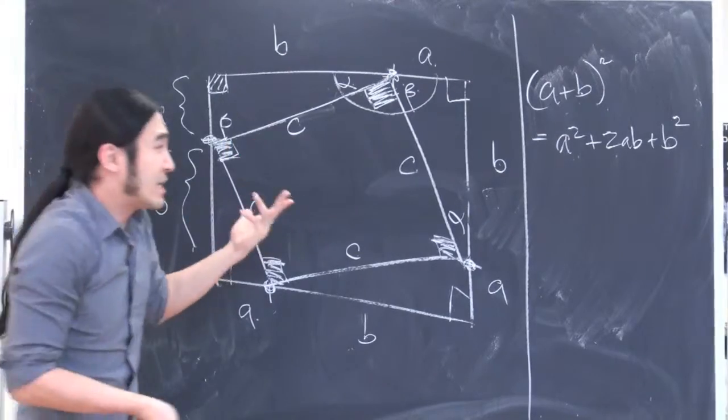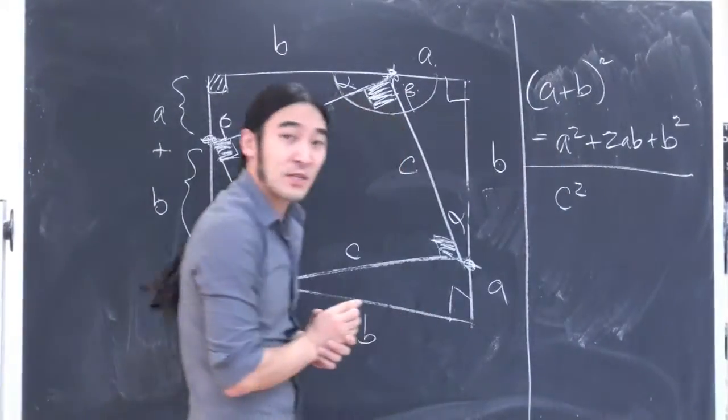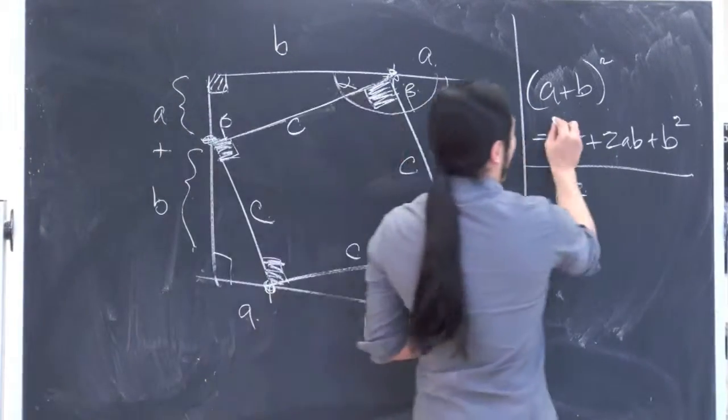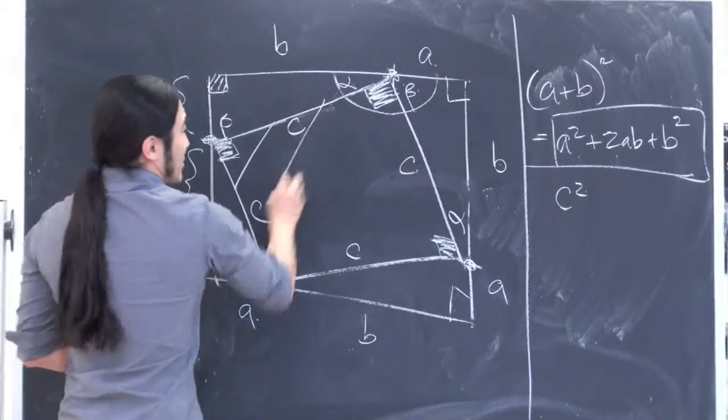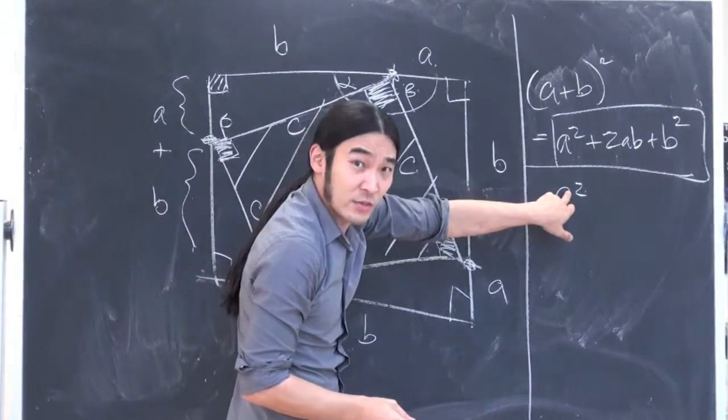Now let's focus on the inside square. That's simple. That's just C times C. So that's C squared. Do you guys agree? So now let's do it piecemeal. So I know the entire area is this thing, right? And I know the area inside, which is what we just did, is C squared.